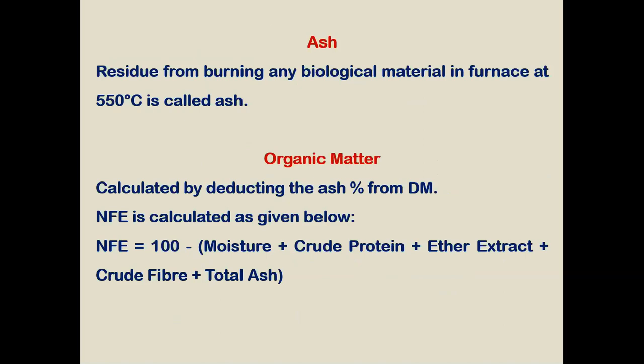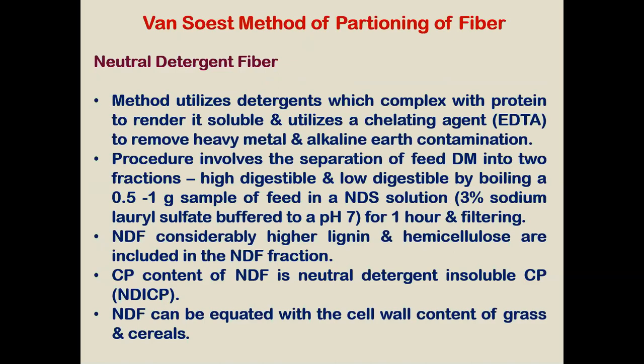Ash, or totalized residue — the residue from burning any biological material — is called ash. Organic matter is calculated by deducting the ash percentage from the dry matter. NFE, the nitrogen-free extract, is calculated by the formula: 100 minus (moisture + crude protein + ether extract + crude fiber + ash). That way we can calculate the NFE carbohydrate component.